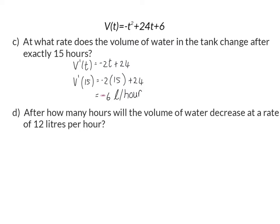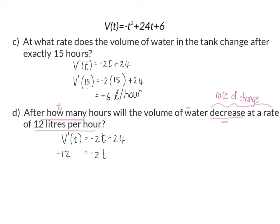Question D: After how many hours will the volume of water decrease at a rate of 12 liters per hour? We are asked to determine t, and they are asking about the rate at which the volume is decreasing, which is the rate of change — so we work with the derivative. The word decrease indicates we use minus 12 liters per hour. So minus 12 is substituted into the derivative and we solve for t. Moving the minus 2 and adding 12 to get 36, then dividing by 2, we find that after 18 hours the volume decreases at a rate of 12 liters per hour.